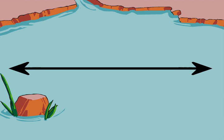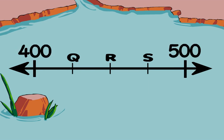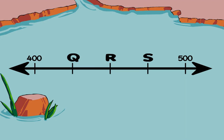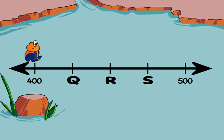You can read any number line in three easy steps. Step 1: Locate the benchmarks and find the interval between them. Step 2: Count the equal segments and find each length. Step 3: Skip count to label the marks between the benchmarks.